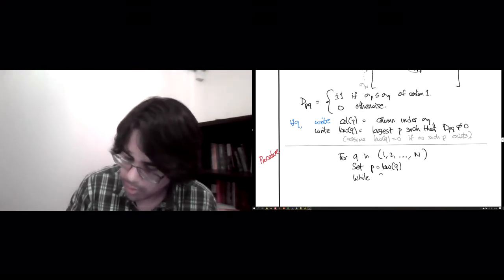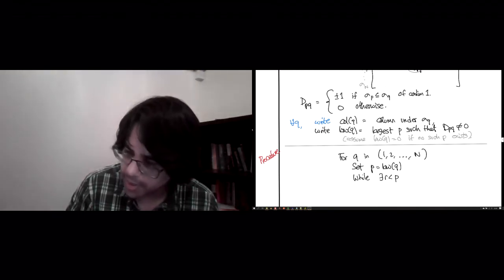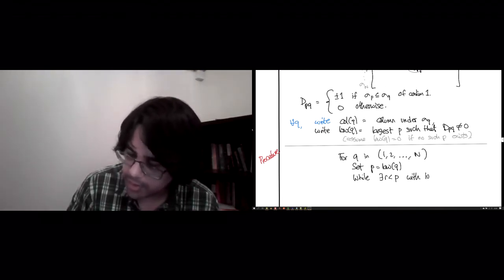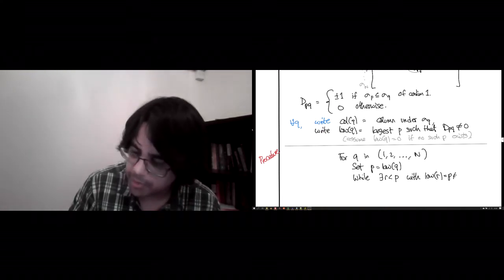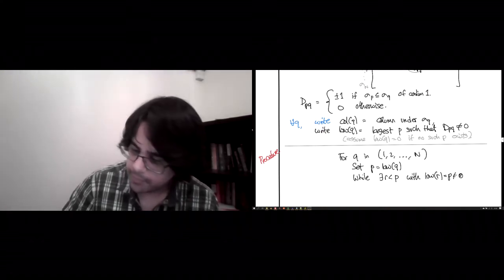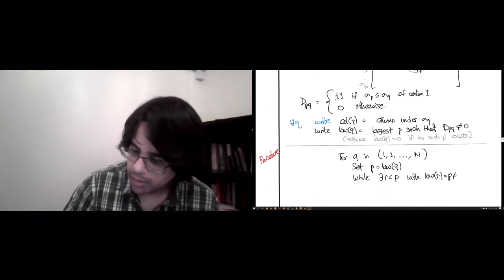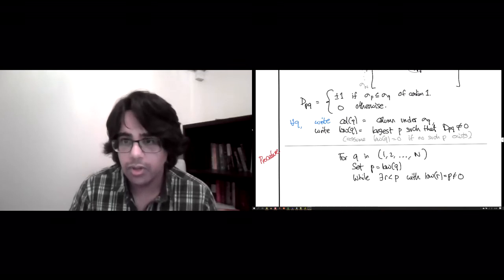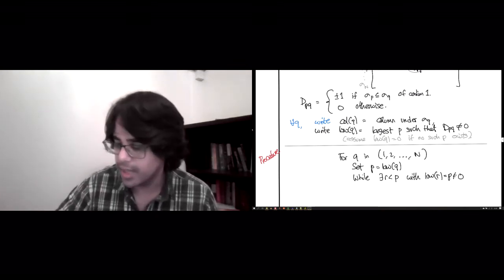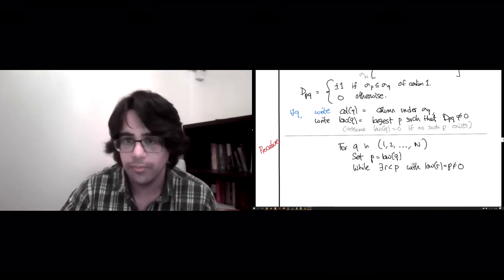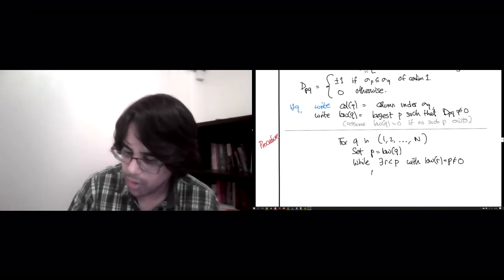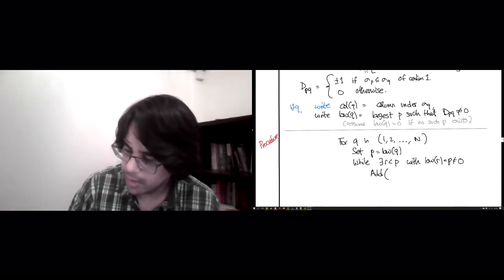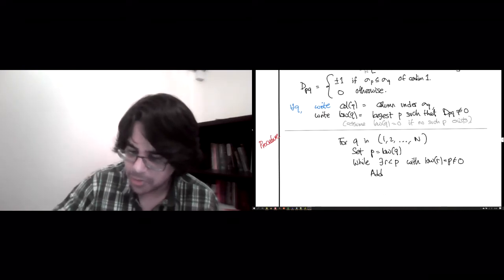so while there is some R less than P with the same low value, which also happens to be non-zero, we use the column of R to clear out this lowest entry in the column of Q. So what that requires in terms of row operations is adding, let's see if we've got this right, I think it should be minus d_pq divided by d_pr,